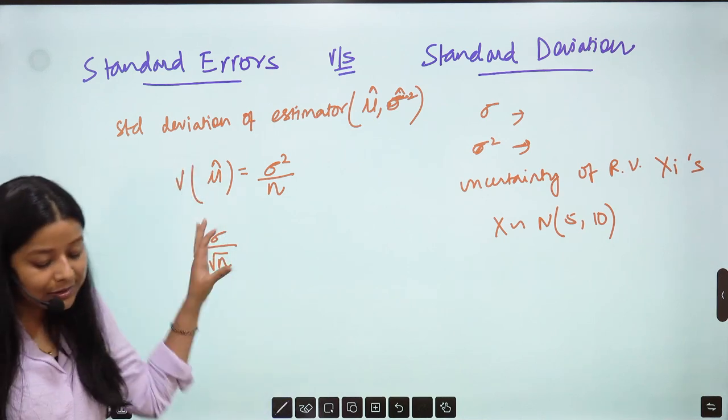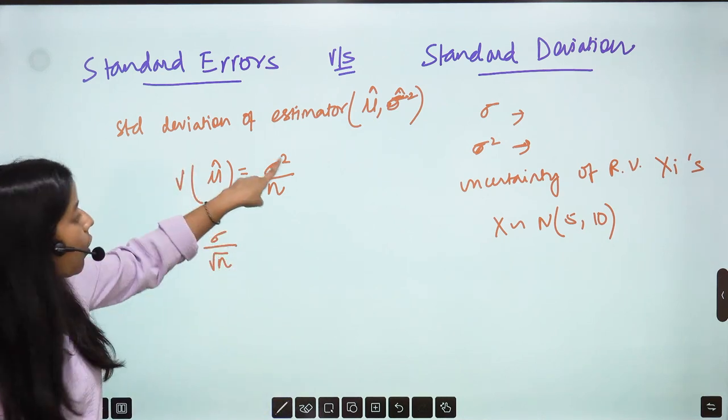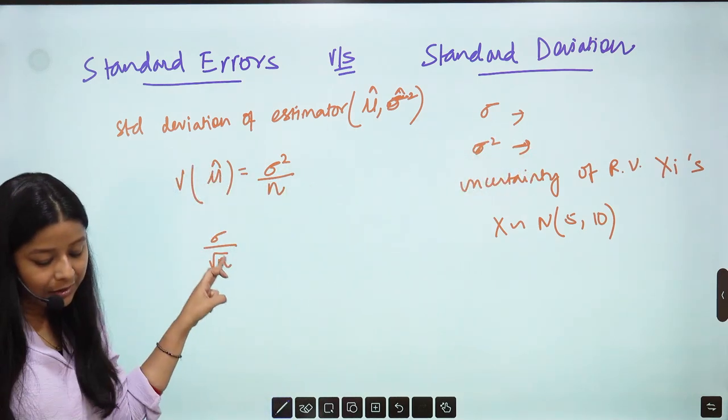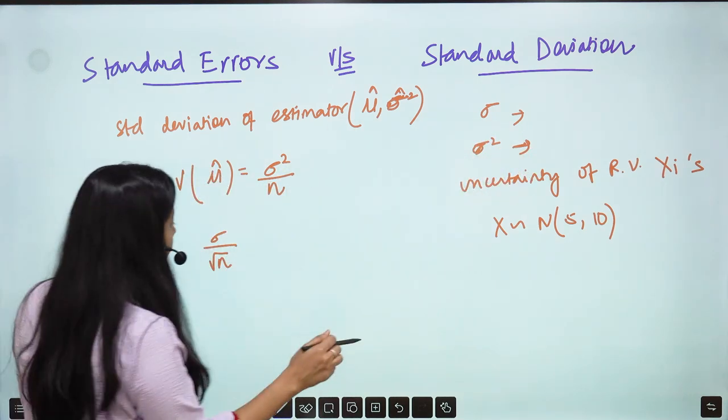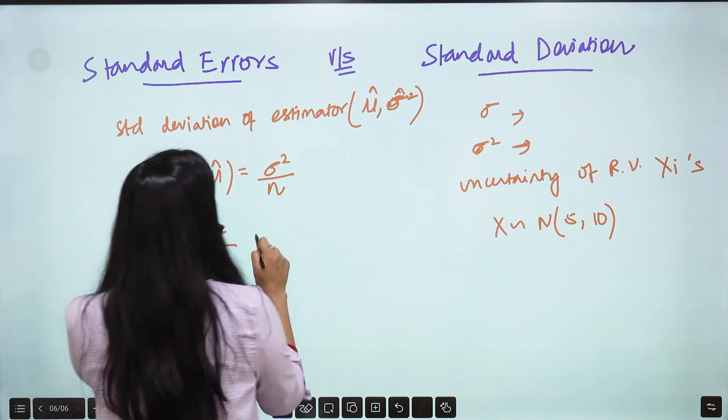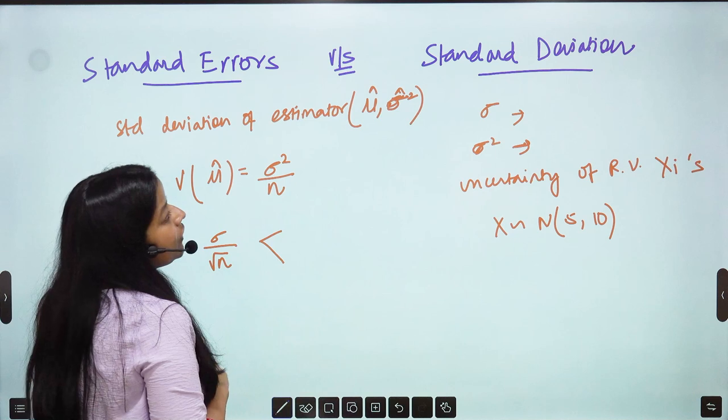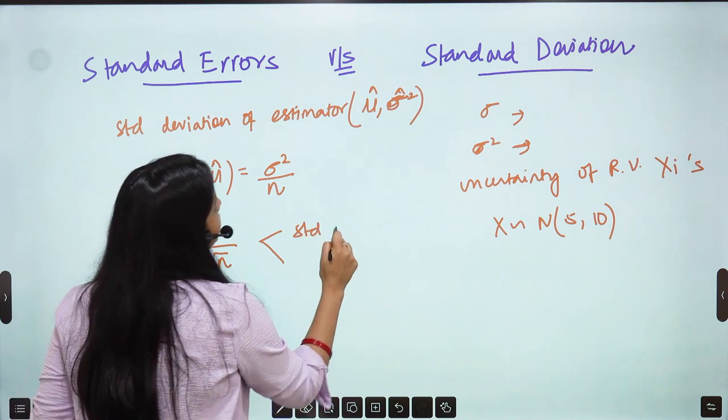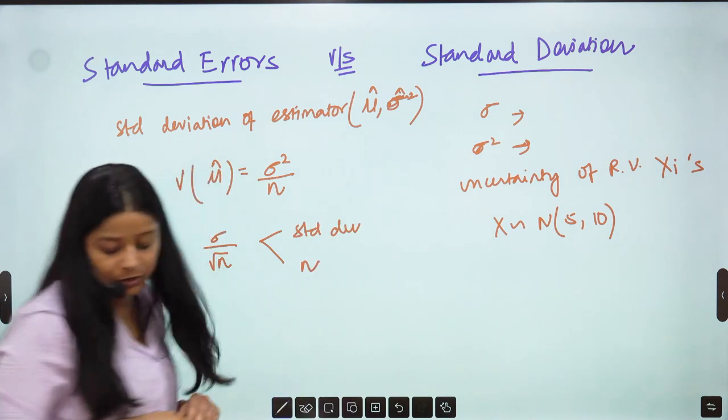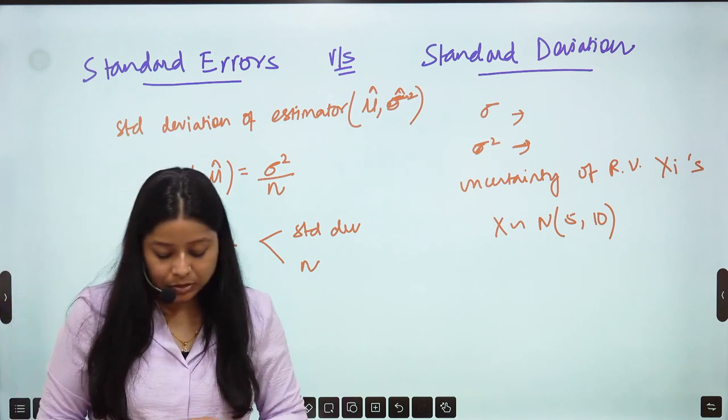This is what? This depends on the Standard Deviation Sigma. It depends on Standard Deviation of the data but it also depends on the size of the data. So it depends on two things. It depends on Standard Deviation of the data and n which is your sample size.